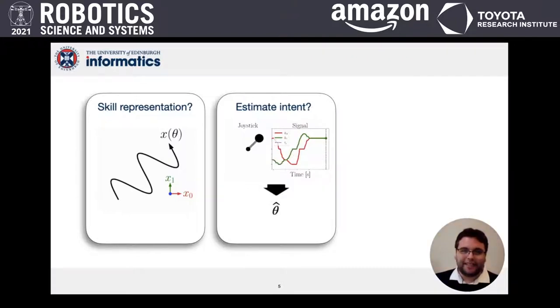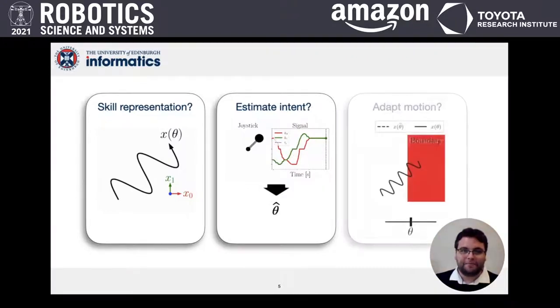Rather, their intention should be recognized from the interface signals. And third, this encoding should be versatile enough to adapt the motion for obstacles, whilst respecting the skill. For example, the wave's amplitude and frequency.